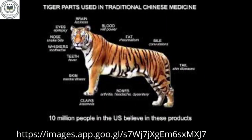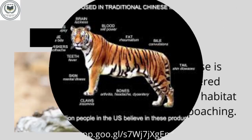Tigers are hunted illegally for their gloves, bones, skins, whiskers and virtually every part of their body, which is used in traditional Chinese medicine. Tiger fat, for instance, is used in balms to treat rheumatism; eyes for epilepsy; tail for skin disease; brain is used for laziness, etc.